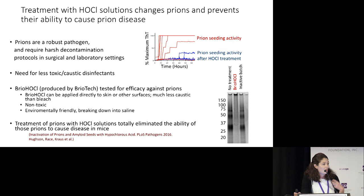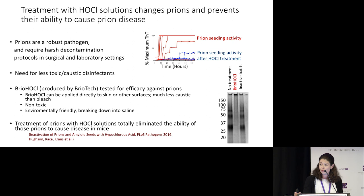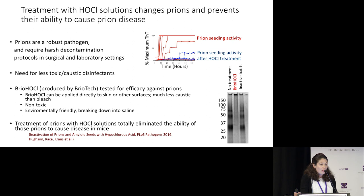While this does not pose a risk for casual human-to-human transmission, there really is a need for harsh decontamination protocols in surgical and laboratory settings. It's really beneficial to have a less toxic, non-caustic disinfectant such that it doesn't pose a hazard to the user. BrioTech formulates these hypochlorous acid solutions, and they brought these to us to test them for their efficiency in decontaminating prions.